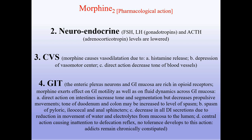Gastrointestinal tract: the enteric plexus neurons and GI mucosa are rich in opioid receptors. Morphine exerts effects on GI motility as well as fluid dynamics across GI mucosa. Direct action on intestines increases tone and segmentation but decreases propulsive movements. Tone of the duodenum and colon may increase to the level of spasm. Spasm of pyloric, ileocecal, and anal sphincters occurs. All GI secretions decrease due to reduction in water and electrolyte movement. Central action causes inattention to the defecation reflex. No tolerance develops to this action; addicts remain chronically constipated.